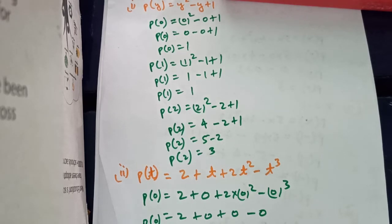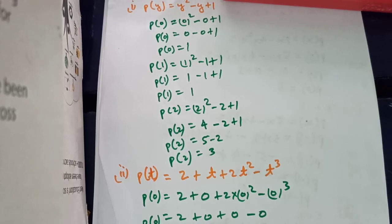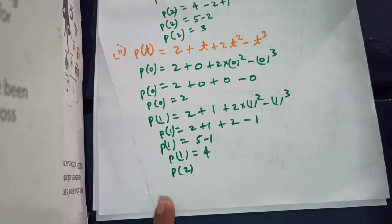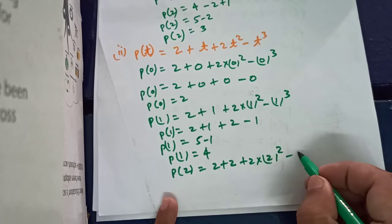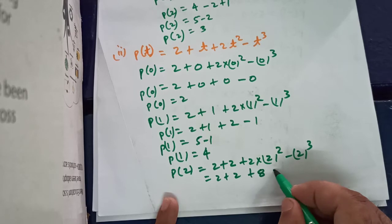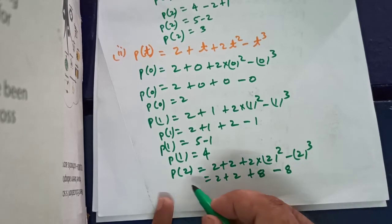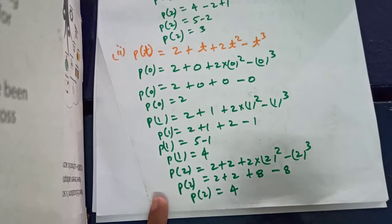Now p(1): substituting t as 1 gives 2 plus 1 plus 2 times 1 squared minus 1 cubed. So 2 plus 1 plus 2 minus 1 equals 2 plus 2 is 4, plus 1 is 5, minus 1 is 4. So p(1) equals 4. For p(2): 2 plus 2 plus 2 times 2 squared minus 2 cubed equals 2 plus 2 plus 8 minus 8. Plus 8 and minus 8 cancel out, so p(2) is also equal to 4.